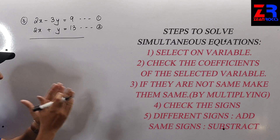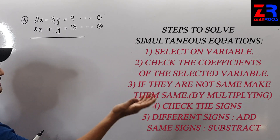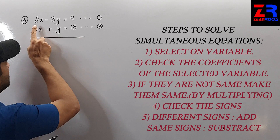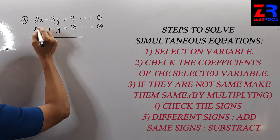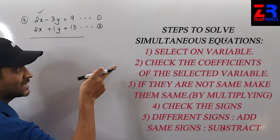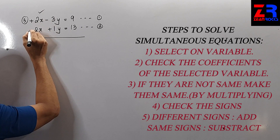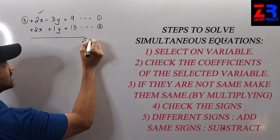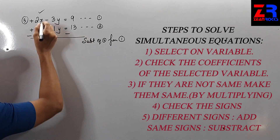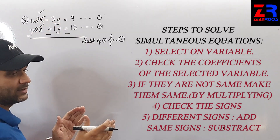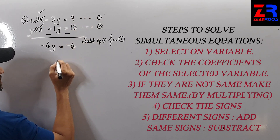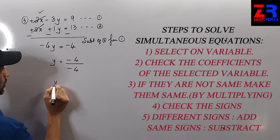Question 3: my first step is selecting a variable — x or y. Looking at the question, the coefficient of x is the same in both equations, so I select x. Check the sign — it is plus, the same in both. So I will subtract equation 2 from equation 1. Signs change. x cancels. Minus 3 minus 1 gives minus 4y. 9 minus 13 is minus 4. Therefore y = (−4) ÷ (−4) = 1.